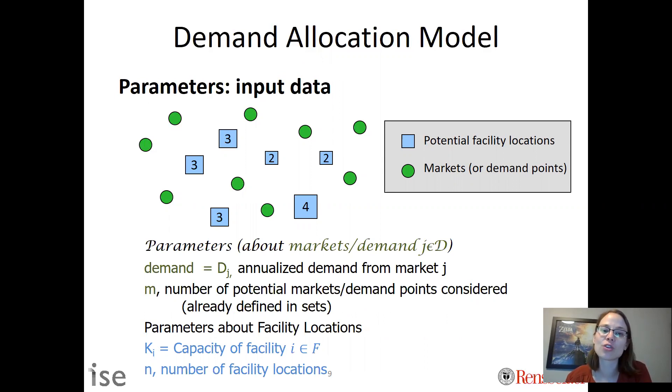We are given information about the demand. For each green dot I need to know the demand for that market—how many units would be demanded. For every square, which is a facility, we need to know the capacity. Again, the demand Dj and KI are things that are given. We're not determining that in our model.